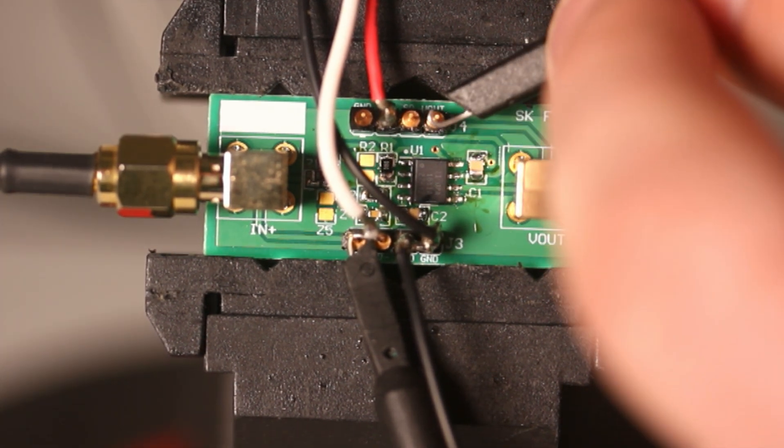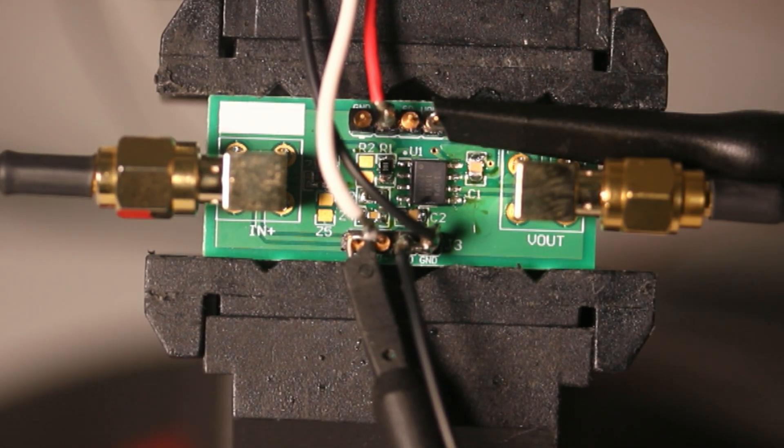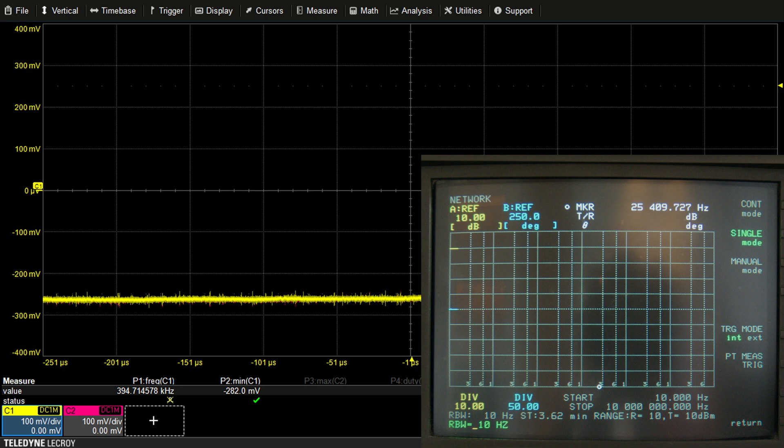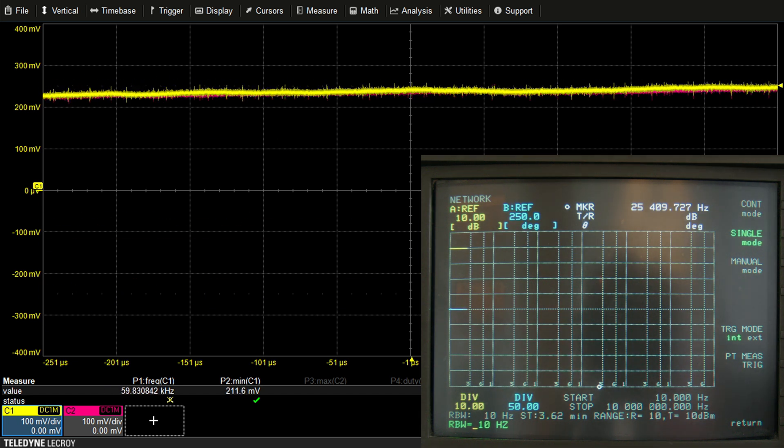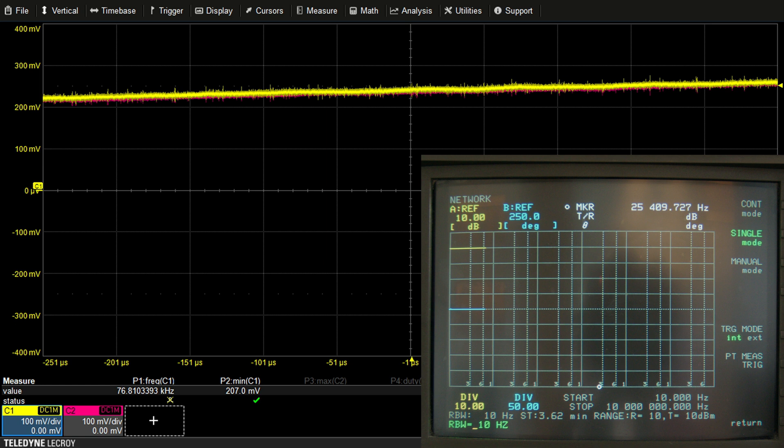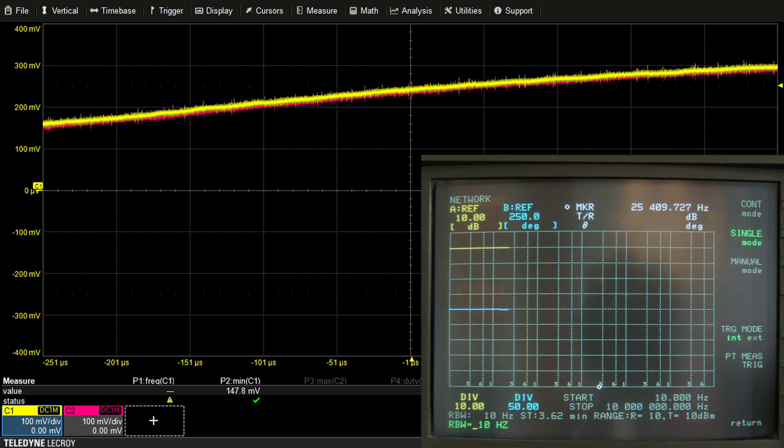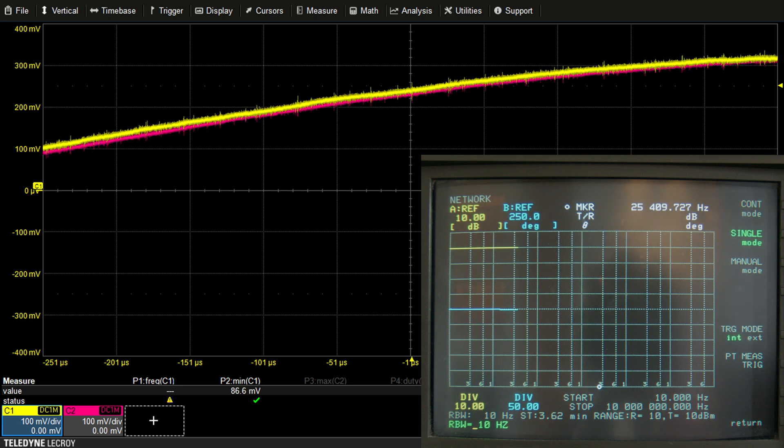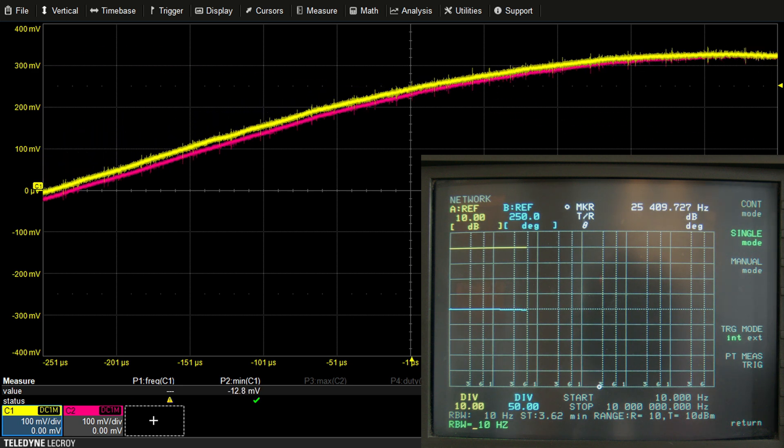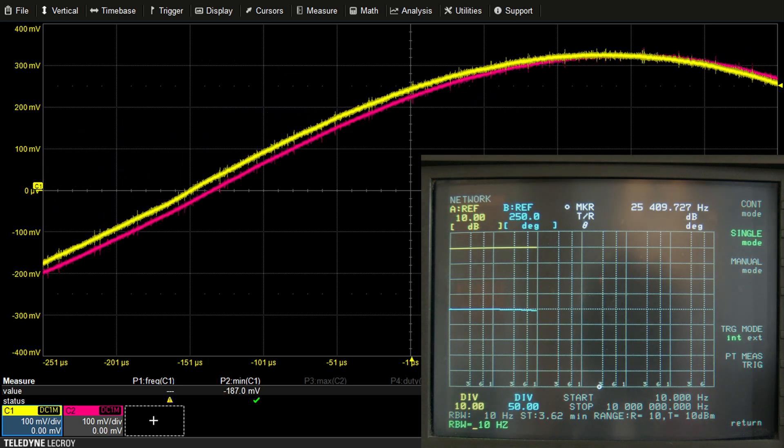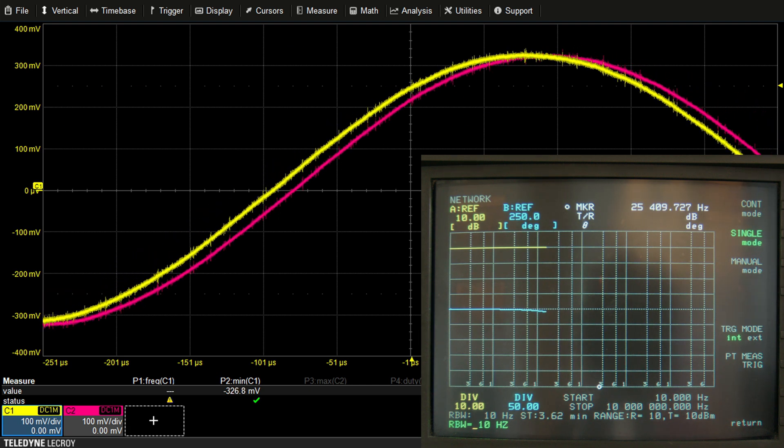Here's our test running. The network analyzer output frequency domain data can be seen in the bottom right of the screen, and the scope time domain is shown in the background. The test is performed with input frequencies scanned from 10 hertz to 10 megahertz to match our simulation. The scope timebase has been chosen to allow the sine wave close to 20 kilohertz to be observed.